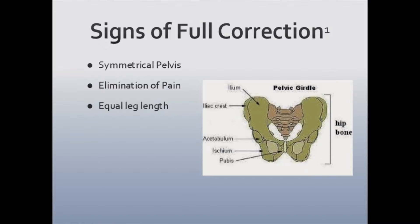Signs of a full correction of a posterior inominate rotation include a symmetrical pelvis, elimination of pain, and/or equal leg length.